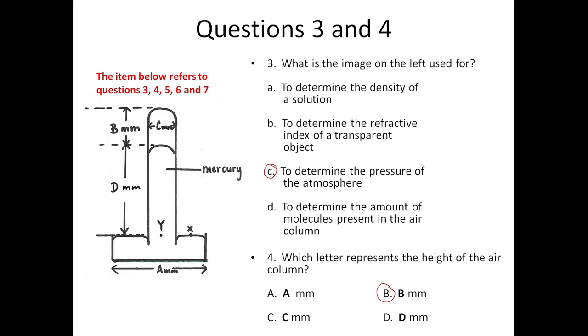What is the image on the left used for? To determine the pressure of the atmosphere. Which letter represents the height of the air column? That's B. So three is C, four is B.